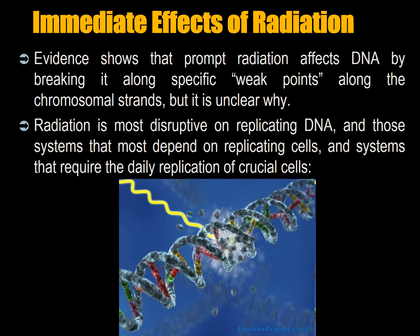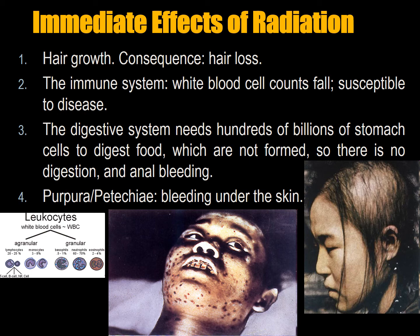Evidence shows that prompt radiation affects DNA by breaking it along weak points along chromosomal strands, though it's not entirely clear why. Radiation is most disruptive on replicating DNA and those biological systems that most depend on daily replication. Therefore, hair growth — which replicates cells every day through follicles — is disrupted; the chromosomes are damaged and hair falls out.